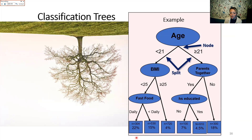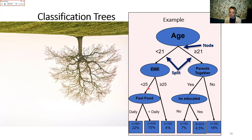Following the path of younger mothers with lower BMIs and daily fast food, you get a group where around 22% had the outcome — a fairly high proportion of cases. In contrast, younger mothers with higher BMIs had only about 4% cases among roughly 700 participants. Through this approach you can see how different risk factors come together to result in higher or lower probabilities of the outcome.